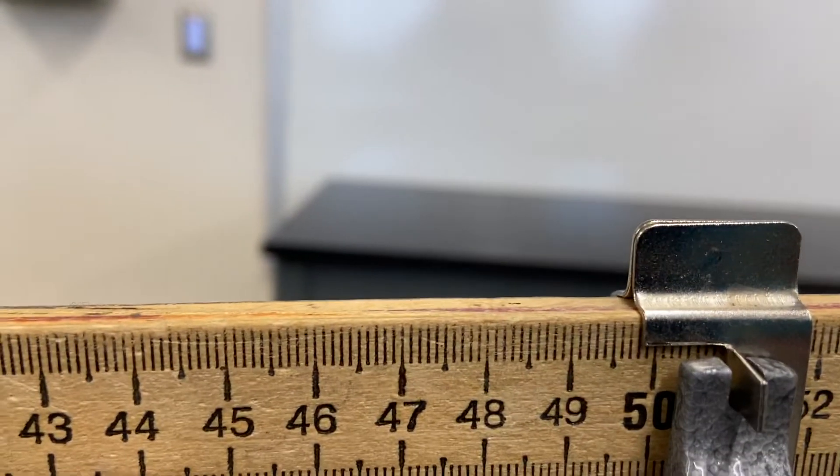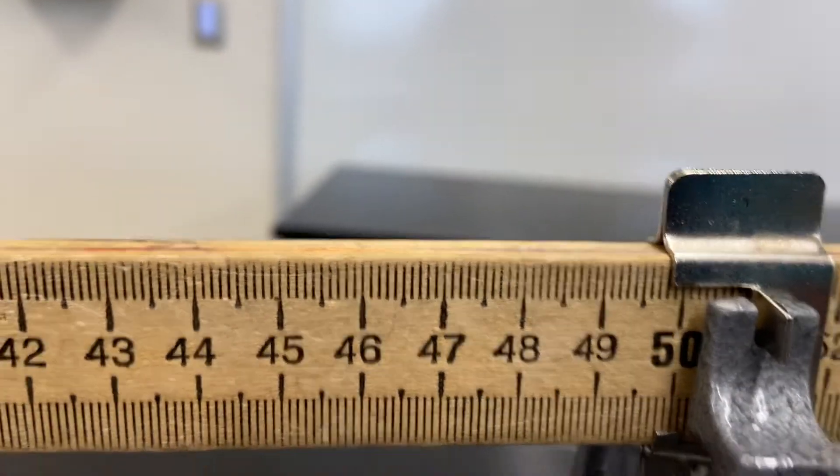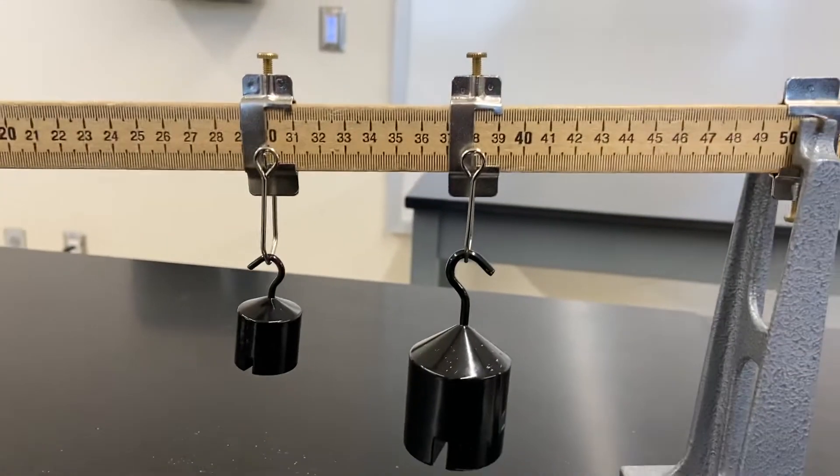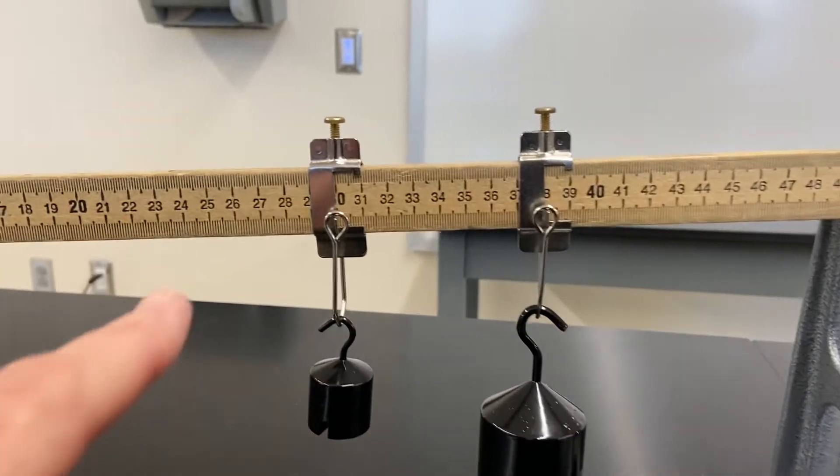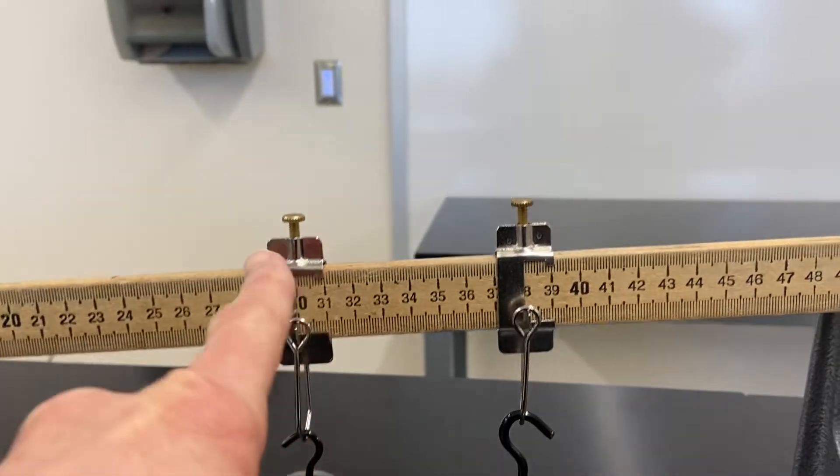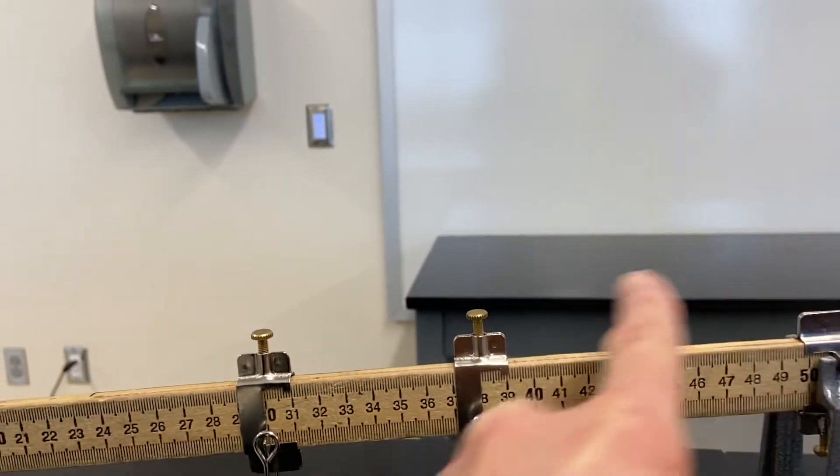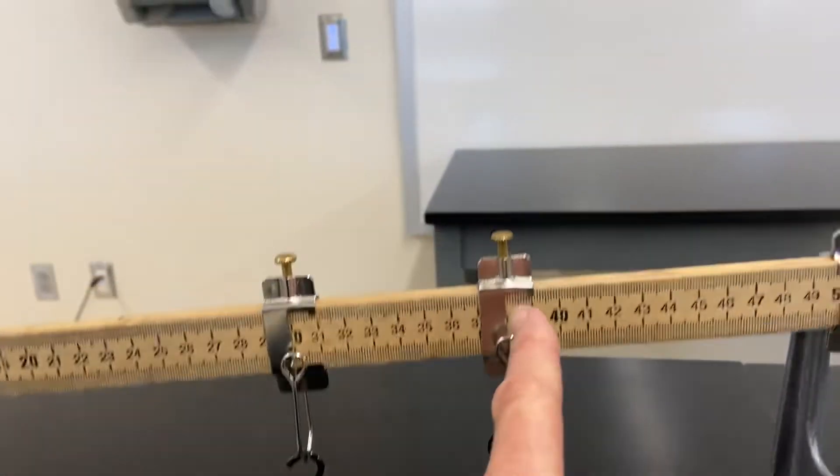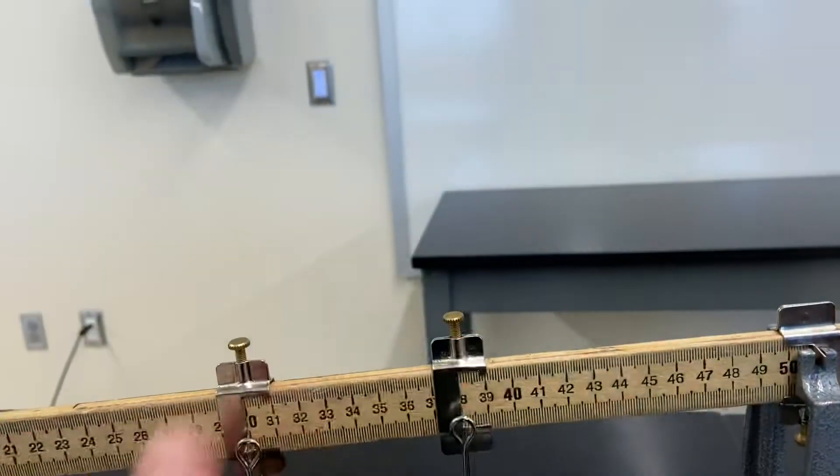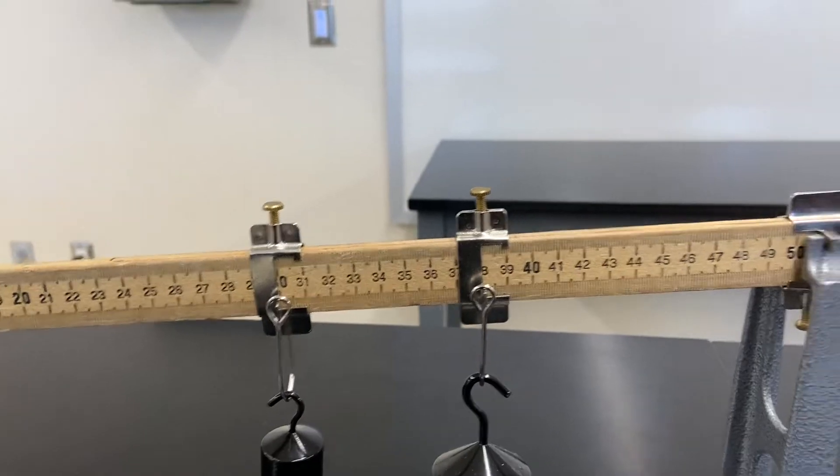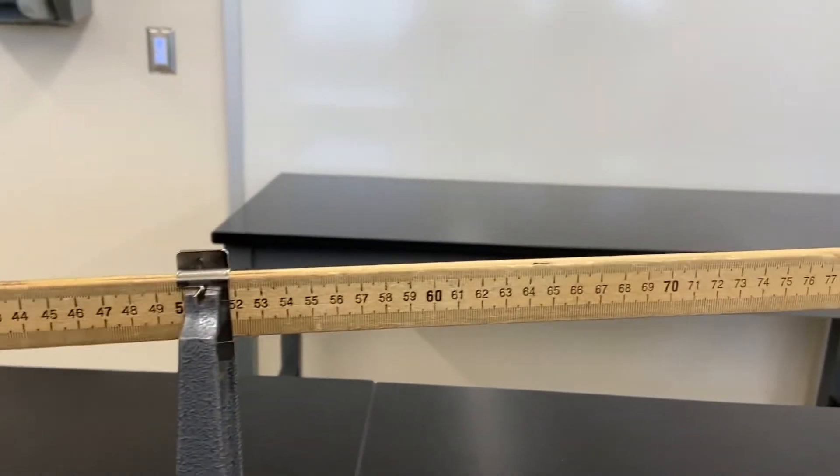So we know that the total torque on the left hand side has to be calculated as force times r plus force times r, which gives me the total torque moving counterclockwise. That must be balanced by the torque going clockwise.